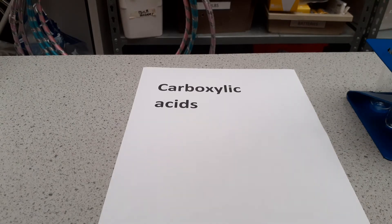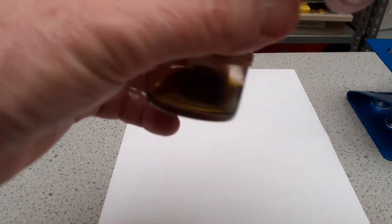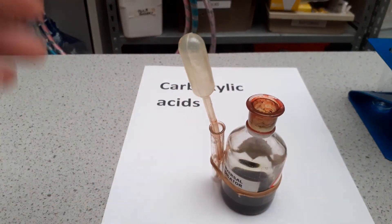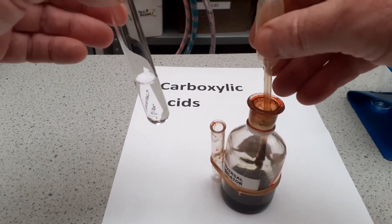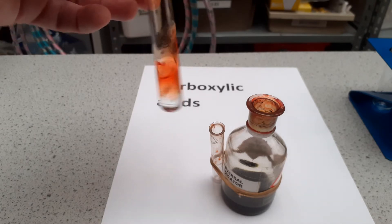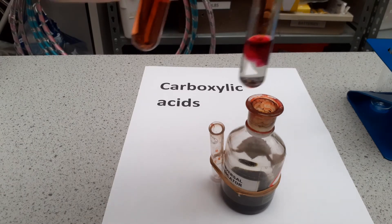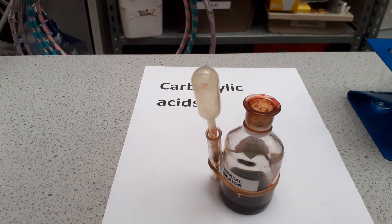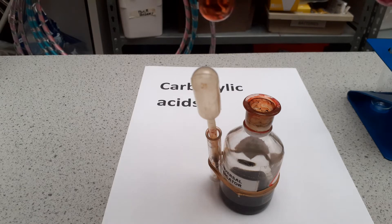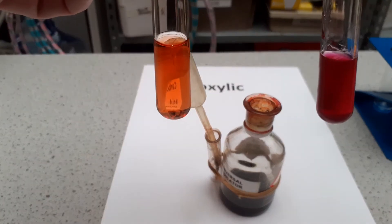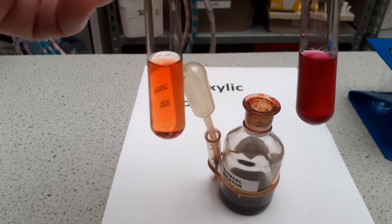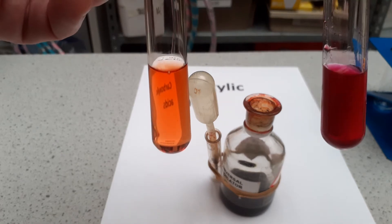Our first test is with universal indicator. I'm going to add a small amount of universal indicator to each of them. This is the ethanoic acid — we look at the colour there — and I'm going to do the same with hydrochloric acid. You can see the hydrochloric acid is much redder. The ethanoic acid has a pH of about three, while the hydrochloric acid with its dark red colour has a pH of one. So we can say that hydrochloric acid is a much stronger acid than ethanoic acid.